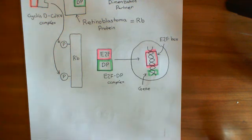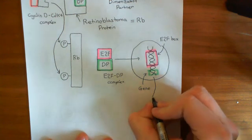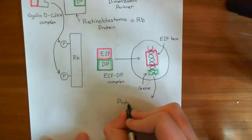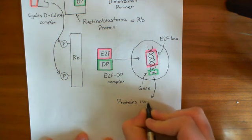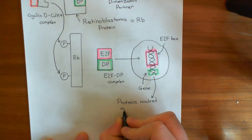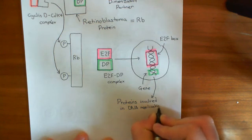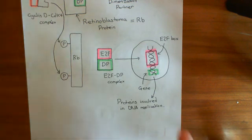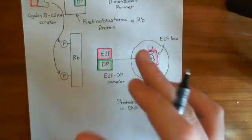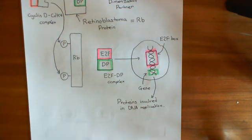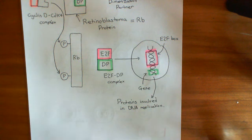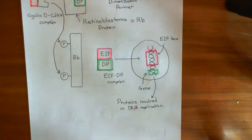This causes the production of proteins involved in DNA replication, which leads to the replication of the DNA. Therefore, you have moved from the G1 phase of the cell cycle to the S phase. It is the retinoblastoma protein that is usually stopping a cell from moving from G1 to S phase. When cyclin D goes up, it activates CDK4, and together they inactivate the retinoblastoma protein and push the cell from G1 to S phase. We'll continue this discussion in the next video.